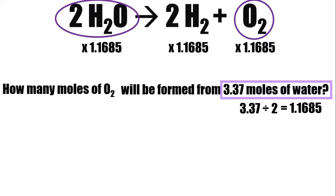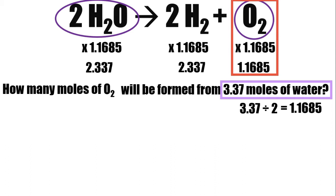Solving for that, we will have 2.337 for water, 2.337 for hydrogen, and 1.1685 for oxygen. Why? Because the coefficient of oxygen is given as 1. Since we're looking for the moles of oxygen, you just have to get the product under oxygen. That's the answer. And minding the significant figures, which is 3, our final answer is 1.17 moles of oxygen.